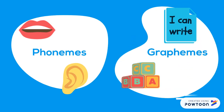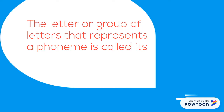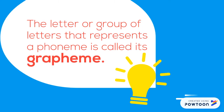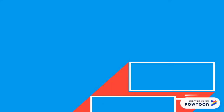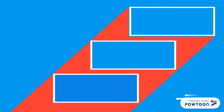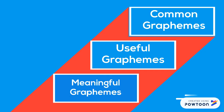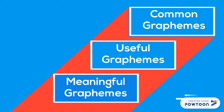The letter or group of letters that represents a phoneme is called its grapheme. Children often begin by noticing graphemes that are common, useful or meaningful to them, such as the letters representing the first sound in their name.